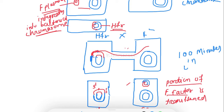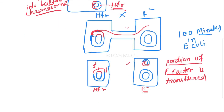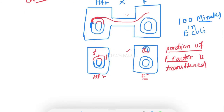But before 100 minutes, the mating breaks. The mating is interrupted before that time, and this results in interrupted mating. This interrupted mating technique is used to map bacterial genes by determining the sequence in which donor genes enter recipient cells.